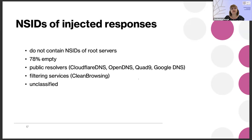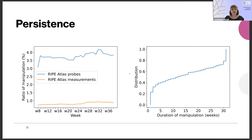In the case of public resolver NSID strings, we believe we encountered transparent forwarders that intercept all queries from RIPE Atlas probes and relay them to public resolvers. Regarding the persistence of manipulation, it remained rather stable during all nine months of the experiment — always less than 1% of measurements affected, with between 3% and 4.5% of RIPE Atlas probes experiencing response injection.